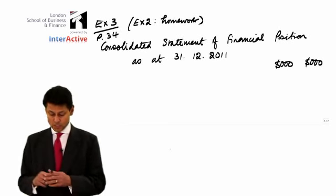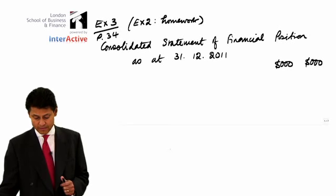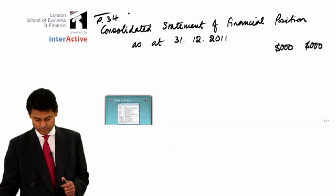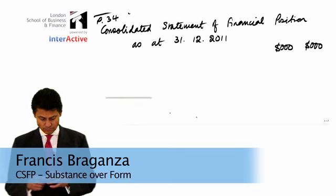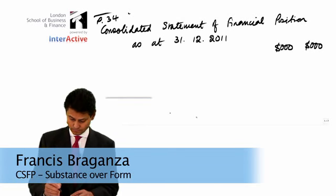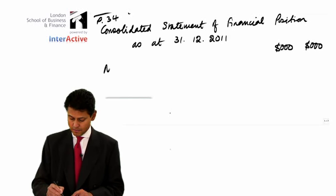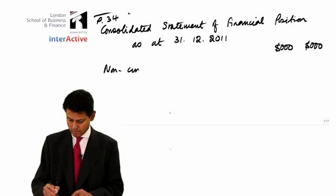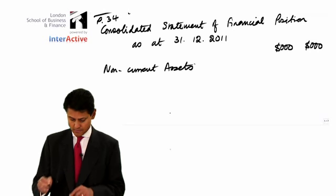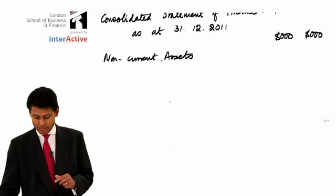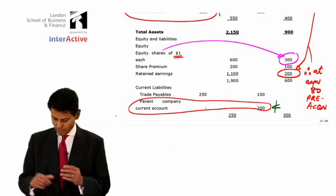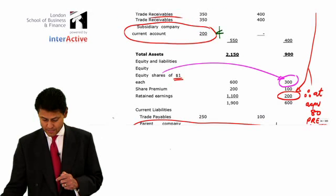So, let's construct a consolidated statement of financial position. We start with our non-current assets. And if you remember in the question, in fact let's look at the question, we have the property,